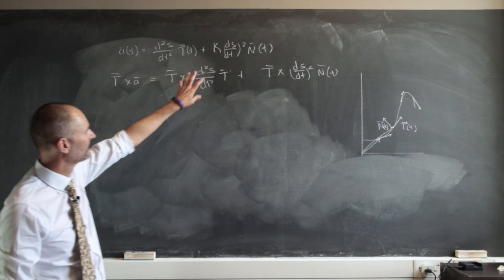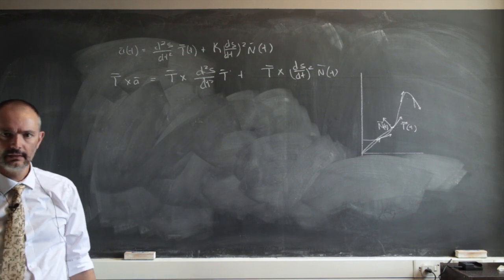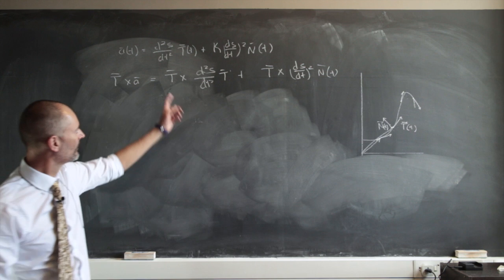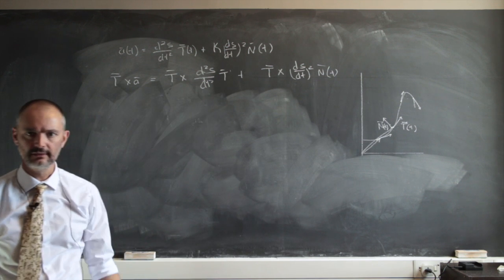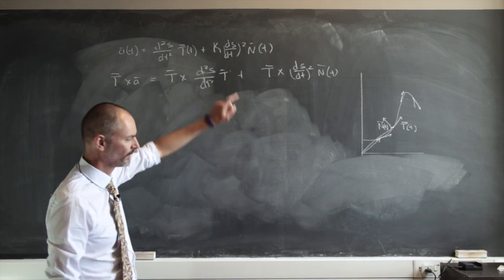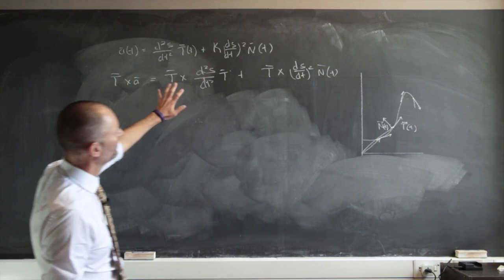Now what is the cross product? This is just a scalar. What is the cross product of two of the exact same vectors there? Well that's just zero. Even though there's a scalar in front of them, the cross product of those two is just going to be zero. So we drop this bit.